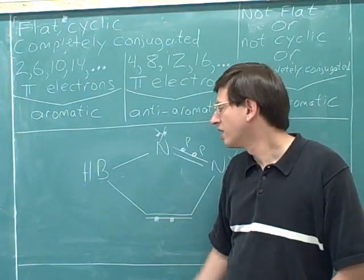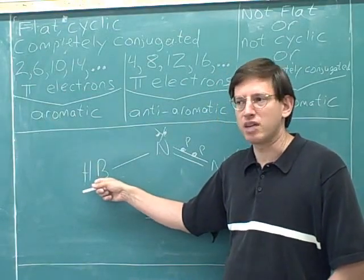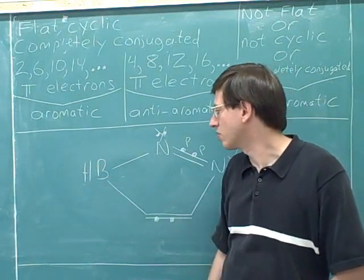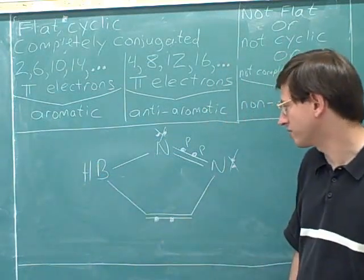So I'll say that again. This boron does have a p orbital, but because it doesn't have any lone pairs, it has nothing to put in the p orbital, so this has no pi electrons either.